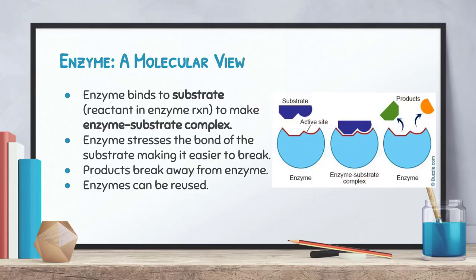If we add extra heat, acid, or do something else that changes the shape of the enzyme's active site, the enzyme will no longer function because the substrate no longer fits into it. Think of it like a lock and a key — the key only fits one specific lock to open the door. If the lock changes shape, the key no longer fits and the door cannot open. It's a very similar concept to how enzymes work in an enzyme-catalyzed reaction.